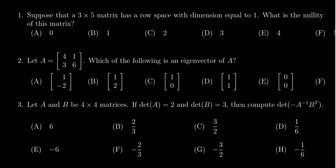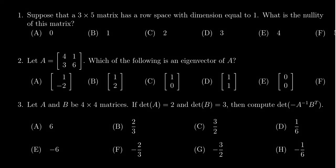In this video, we're going to solve question number one from the practice exam number three from Math 2270, for which we suppose that we have a three by five matrix that has a row space with dimension equal to one. What is the nullity of the matrix?